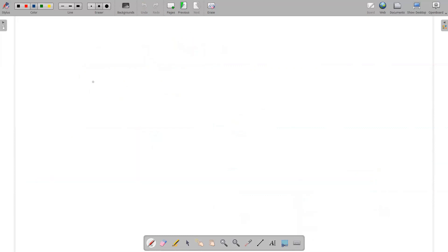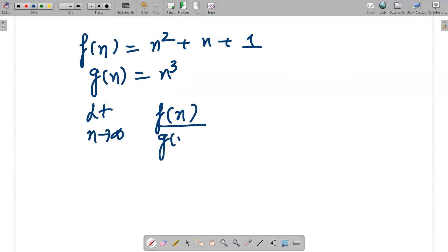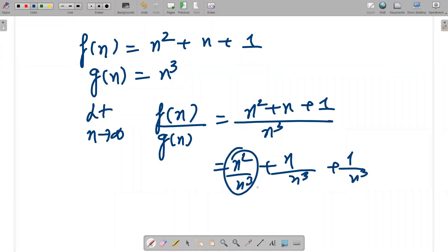In the second question, you can also take the value of f(n) as n² + n + 1 and g(n) is n³. So what answer are you going to get? Again, limit n raised to power infinity, f(n) divided by g(n): (n² + n + 1) divided by n³. n² by n³, n by n³, and 1 by n³. Again it would be 1 by